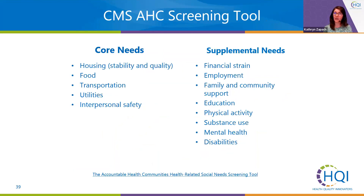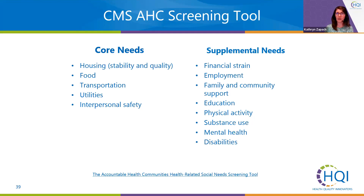CMS required us to use the AHC screening tool. We screened for the five core needs — which will look very familiar — and chose to stick to the five core needs so we had adequate resources to fulfill any referrals needed, as well as to avoid survey fatigue. The interpersonal safety question itself has four questions in it, and food has two questions. We wanted to make sure we were not overwhelming beneficiaries with questions and that the screener had adequate time. Financial strain and employment are drivers for at least four of the five needs, so those topics would come up when we screened, but we were not formally tracking those needs — though we would provide resources if people needed them.